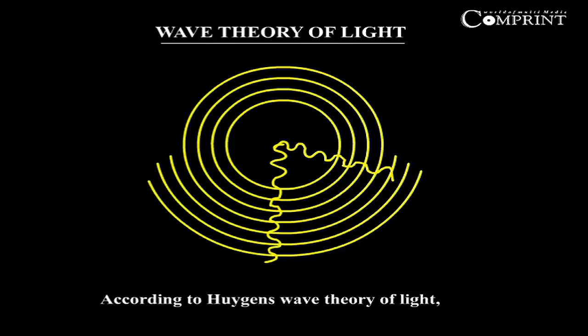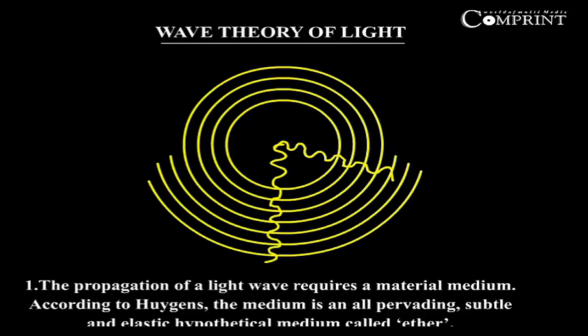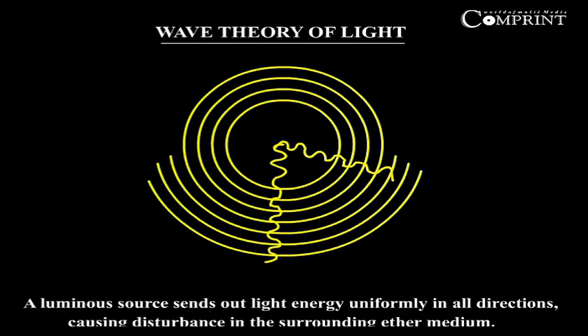According to Huygens' wave theory of light, the propagation of a light wave requires a material medium. According to Huygens, the medium is an all-pervading, subtle, and elastic hypothetical medium called ether.